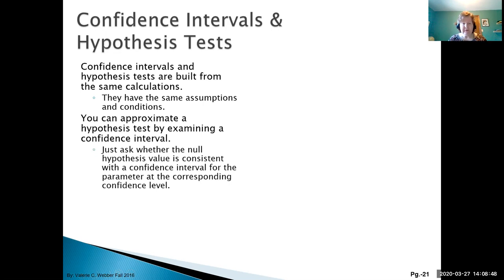You just ask whether the null hypothesis value - the value currently being believed or accepted - is consistent with a confidence interval for the parameter at the corresponding confidence level. We'll build a confidence interval around the sample statistic and check if the population proportion is in that interval.